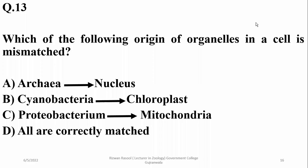Question 13: Which of the following origins of organelles in a cell is mismatched? Archaea gave rise to the nucleus; cyanobacteria gave rise to chloroplasts; proteobacteria gave rise to mitochondria. These origins are based on endosymbiotic theory. Cyanobacteria were modified into chloroplasts and proteobacteria changed into mitochondria — these are the correct matches.